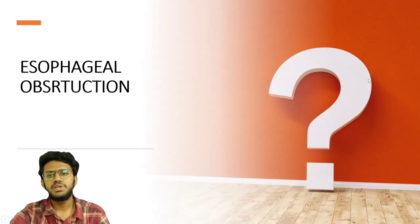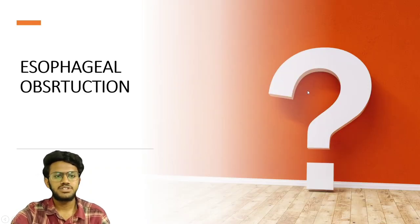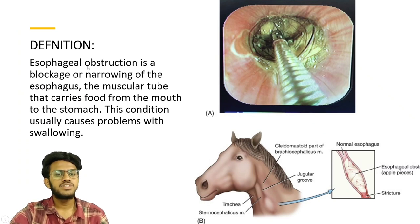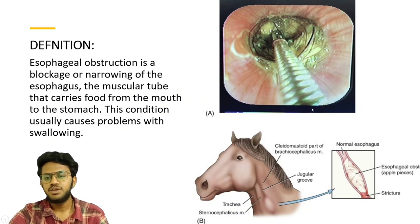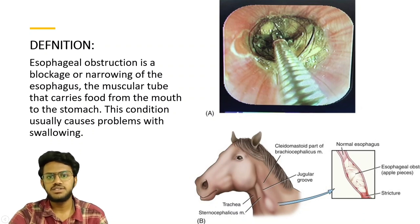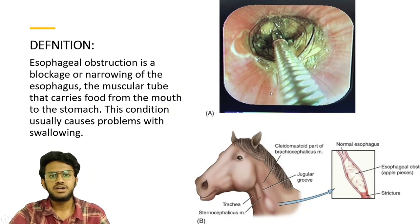Esophageal obstruction is a blockage or narrowing of the esophagus — the muscular tube that carries food from the mouth to the stomach. The condition usually causes problems with swallowing. You are looking at an image of an animal which has swallowed some apple pieces that got stuck in the middle part of the esophagus, causing breathing issues as well.